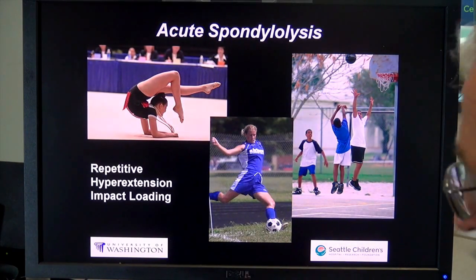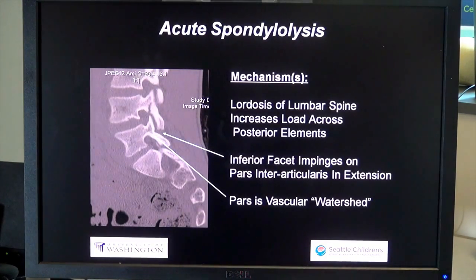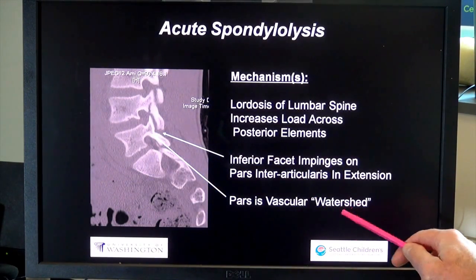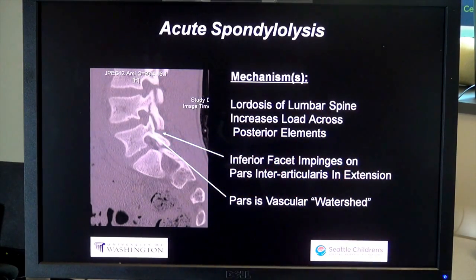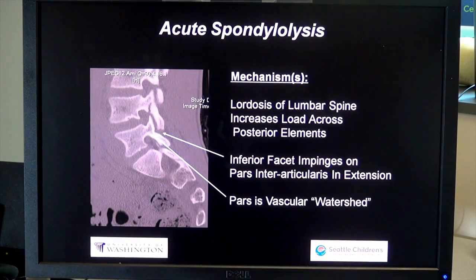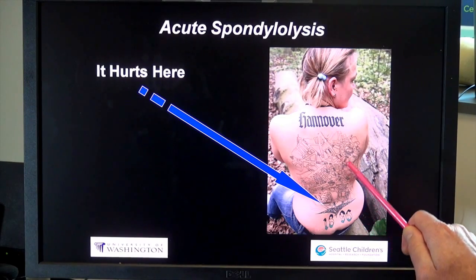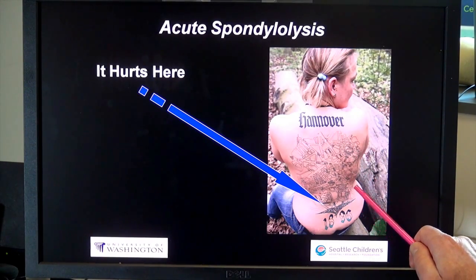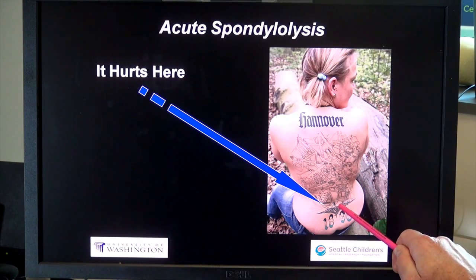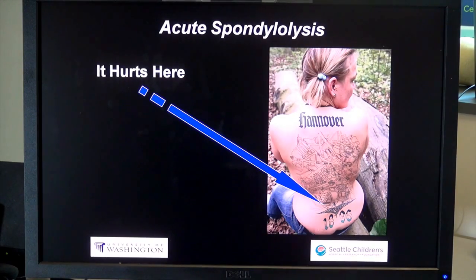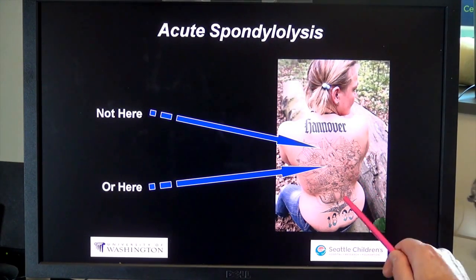With hyperextension, there's a lot of load in this area and people accumulate microtrauma. It's a watershed vascular area; the inferior facet impinges on this area with extension. Competitive Olympic gymnasts — about 30% — have developed a spondylolysis at some point. It hurts in the lower back, and it's very important we ask kids exactly where the back pain is, because I've seen many patients come in with an x-ray of their lower back, and when you ask them where their pain is, they point up to the thoracic region. The back is a big place. In spondylolysis, it hurts down at the lumbosacral junction, not up in the thoracic area.